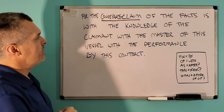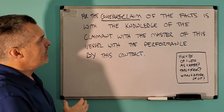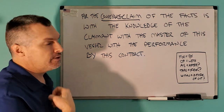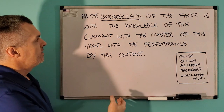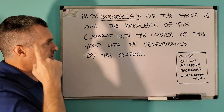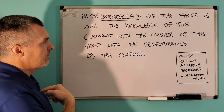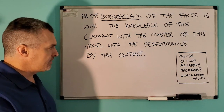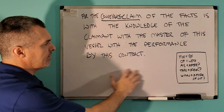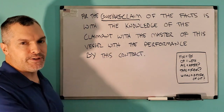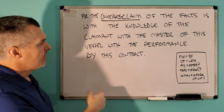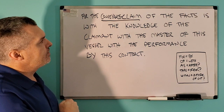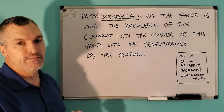And what you're basically saying in this, by the way, is that this claim is saying the conveyance claim of the facts — meaning you're conveying the facts — is with the knowledge of the claimant, with the master of this vessel. The claimant is the master of this vessel, with the performance by this contract. So I'm performing this contract. So backwards: for this contract of the performance is with the vessel of the master, with the claimant of the knowledge, with the facts by the conveyance claimant.